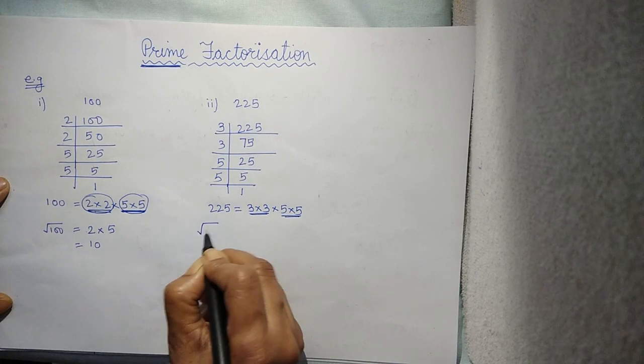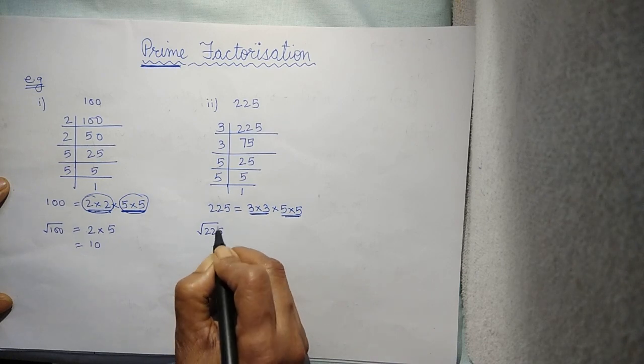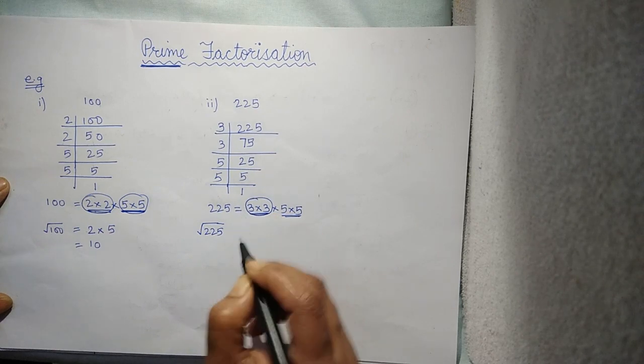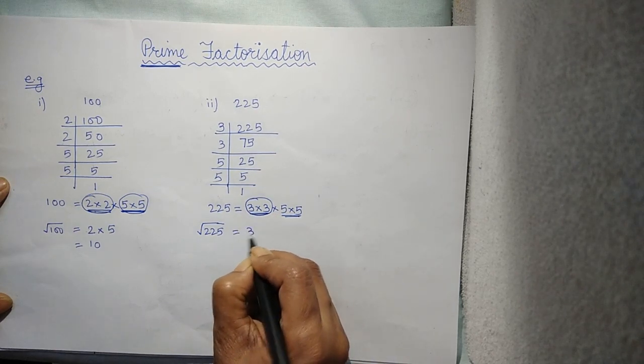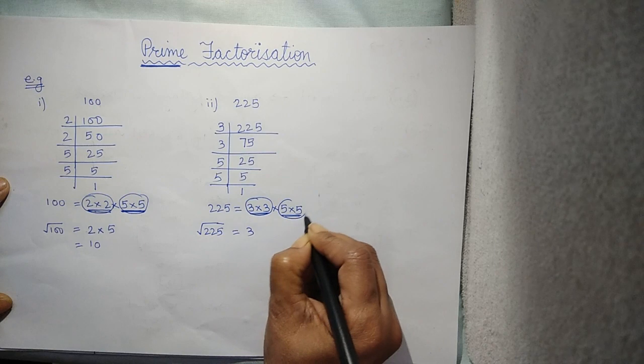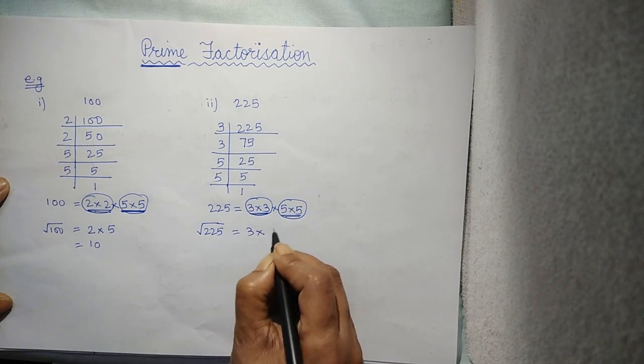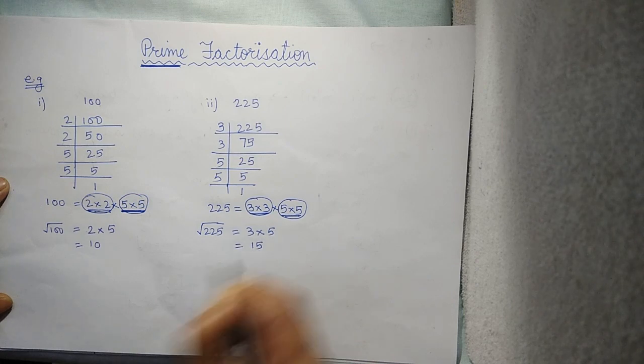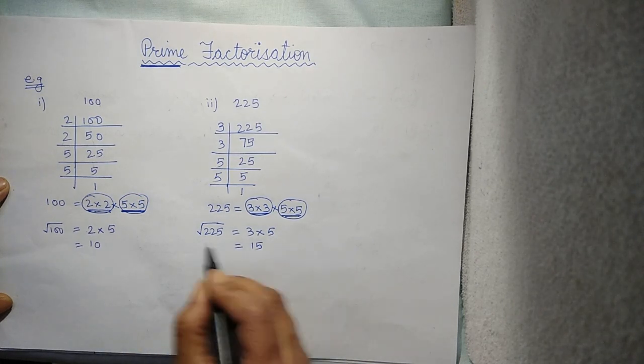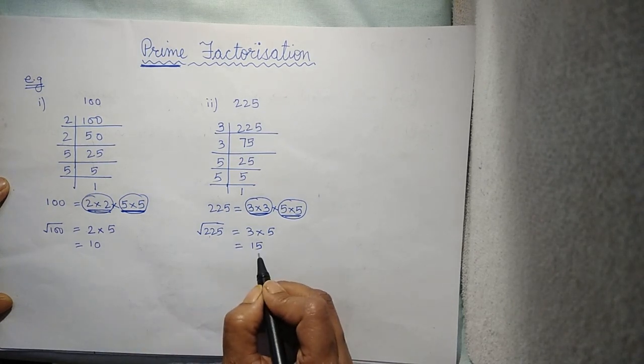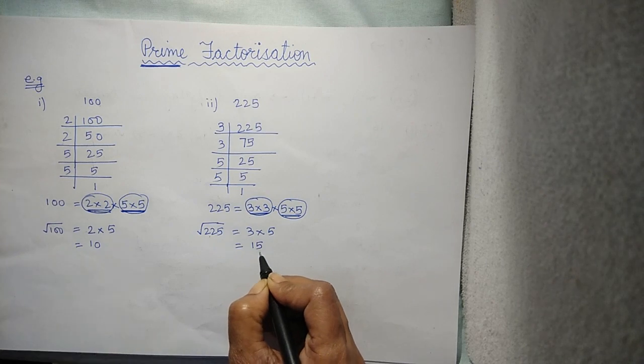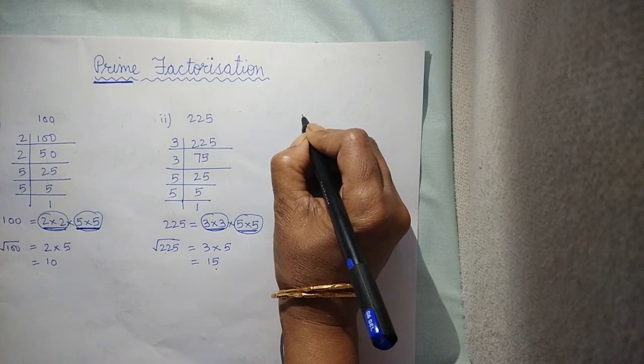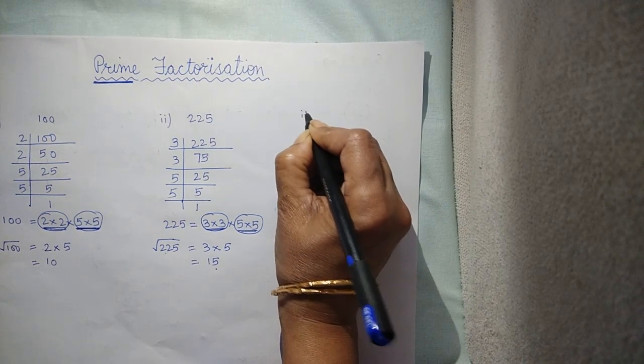To find out the square root of this 225, you will take one number out of first pair, one number out of second pair. Multiply them together. You will get 15. So, square root of 225 is 15.